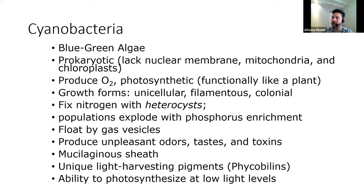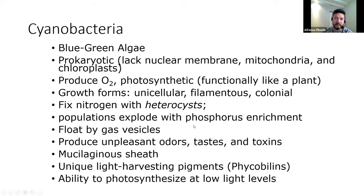Some characteristics of cyanobacteria: they are known also as blue-green algae. Again, they are prokaryotic. They produce oxygen and can do photosynthesis — so functionally, cyanobacteria is like a plant. They can fix nitrogen. Their population — this is very important — explodes with high concentration of nutrients, especially phosphorus. And they produce unpleasant odors, taste, and toxins. They also have the ability to do photosynthesis at low light levels because they are autotrophs and need light to create their food.